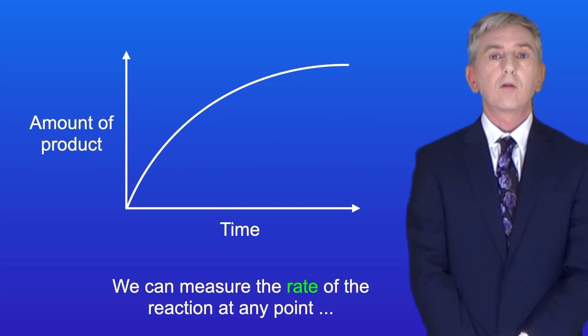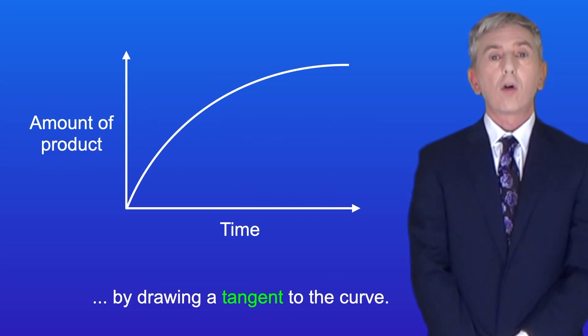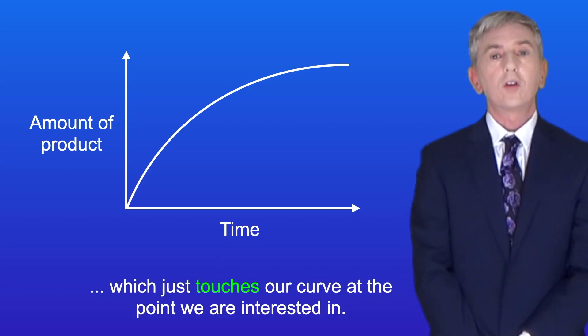Now we can measure the rate of the reaction at any point by drawing a tangent to the curve. A tangent is a straight line which just touches our curve at the point we're interested in.